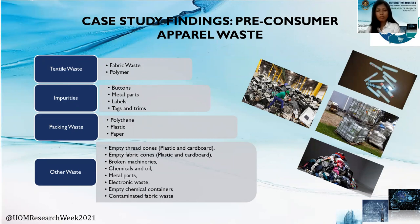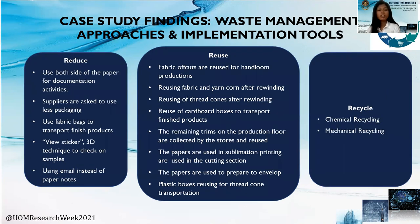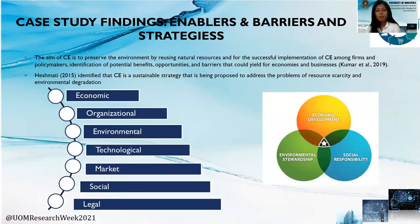These are the pre-consumer apparel waste categories found within the Sri Lankan context. These are the implementation tools under each waste management concept used to implement the concept of circular economy. For example, under Lean Manufacturing: Value Stream Mapping, Kaizen, 5S, and Kanban. Under Green Supply Chain Management: partnering with suppliers who fulfill sustainable requirements, and partnerships made with brands that are into sustainable manufacturing. Under Extended Producer Responsibility: policy-based visibility and adhering with manufacturer guidelines. Under Reduce: use both sides of paper, supply hours through less packaging. Under Reuse: fabric off-cuts are reused for hand loop protection, reusing fabrics and yarn cones after rewinding. Under Recycling: chemical and mechanical recycling.